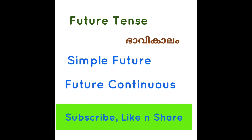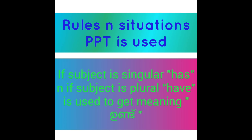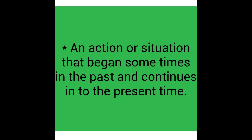If you are seeing my channel for the first time, please subscribe, like, and share. Now, the rules of present perfect tense: rule one — an action or situation that began sometime in the past and continues into the present time.